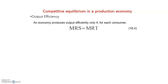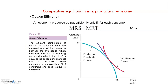An economy produces output efficiently only if, for each consumer, the marginal rate of substitution equals the marginal rate of transformation. On one hand we have the market of goods, and on the other the market of inputs. Output efficiency means that the efficient combination of output is produced when the marginal rate of transformation between the two goods — which measures the cost of producing one good relative to the other — is equal to the consumer's marginal rate of substitution, which measures the marginal benefit of consuming one good relative to the other. Graphically, this means the production possibilities frontier is tangent to the indifference curve, where both have the same slope: MRS = MRT.